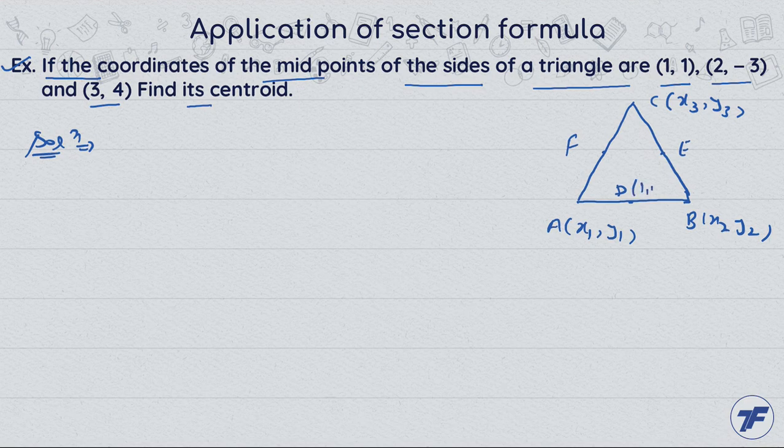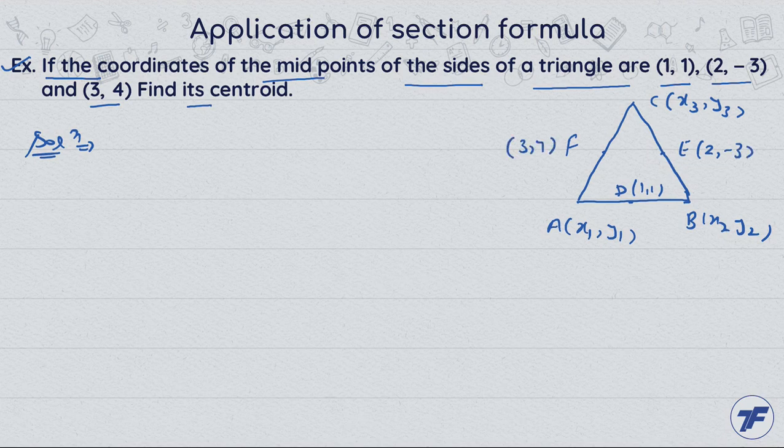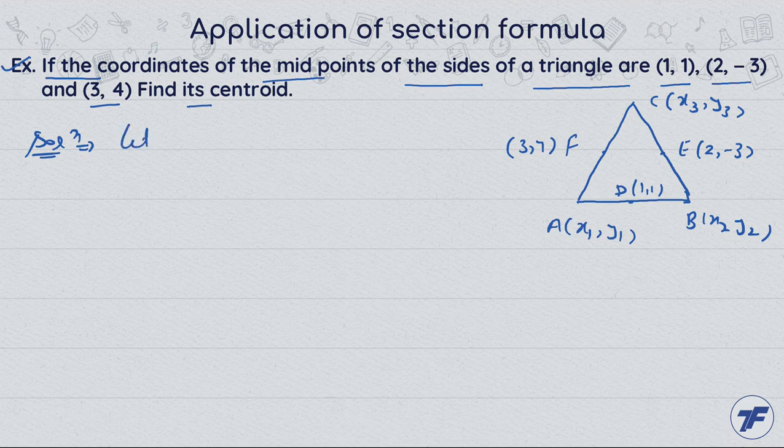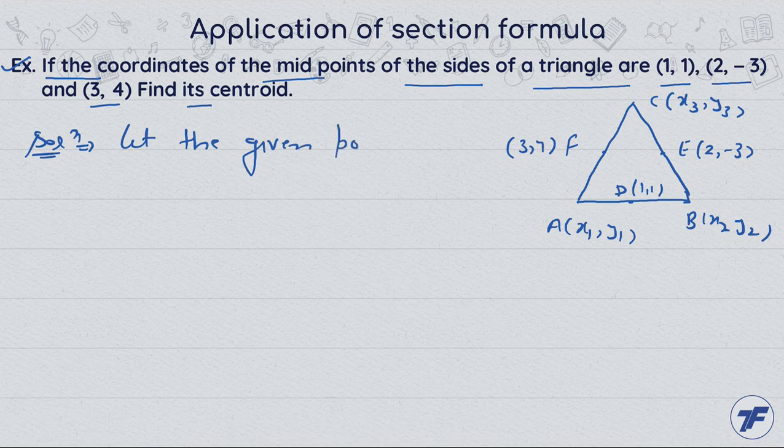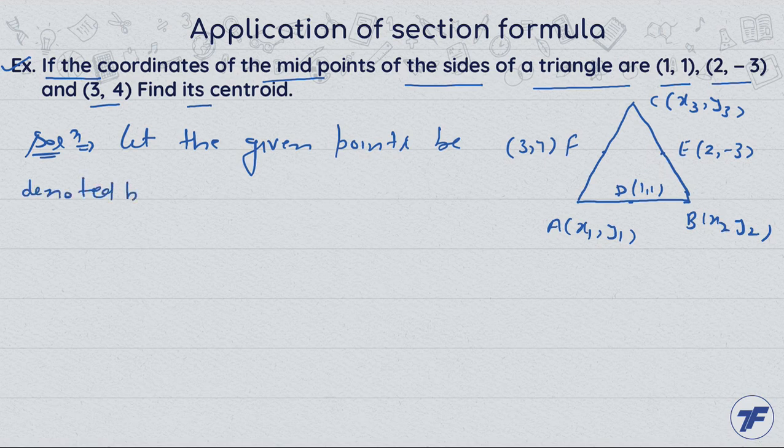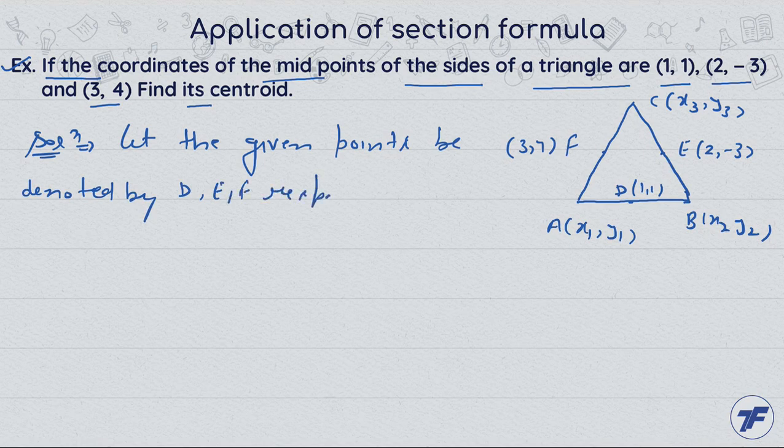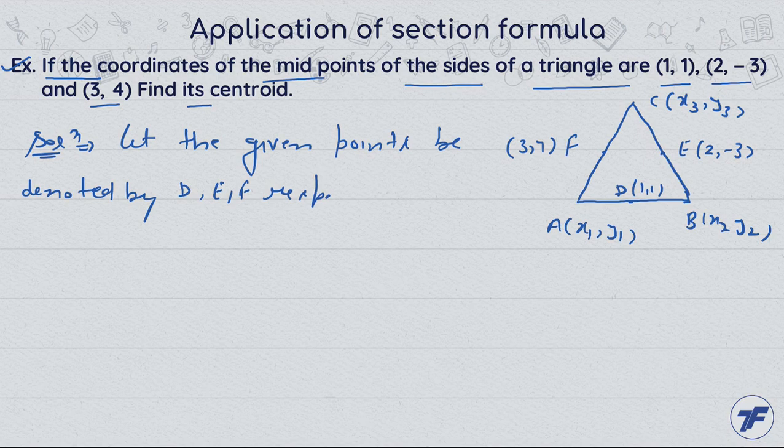The midpoint coordinates are (1,1), (2,-3), and (3,4). Let the given points be denoted by D, E, F respectively, and A, B, C are the vertices of the triangle. Now the midpoint of AB...